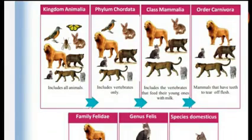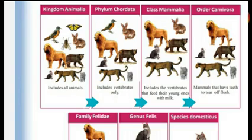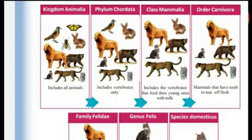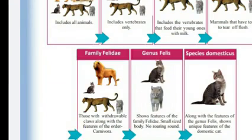Observe the illustration — some indicators are given based on the different levels of identifying the classification of a cat. Kingdom Animalia includes all animals. Phylum Chordata includes vertebrates only. Class Mammalia includes vertebrates that feed their young ones with milk. Order Carnivora includes mammals with teeth to tear off flesh. Family Felidae includes those with retractable claws along with features of Carnivora. Genus Felis shows features of Felidae — small sized body, no roaring sound. Species domesticus shows unique features of the domestic cat.